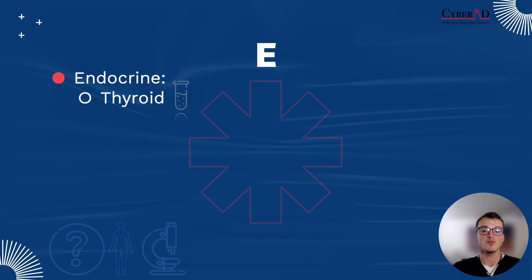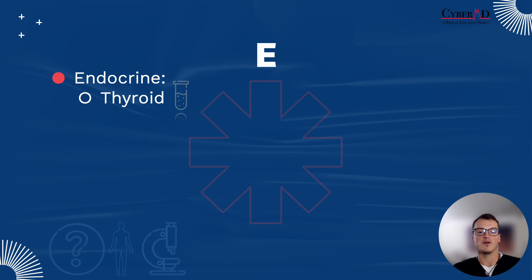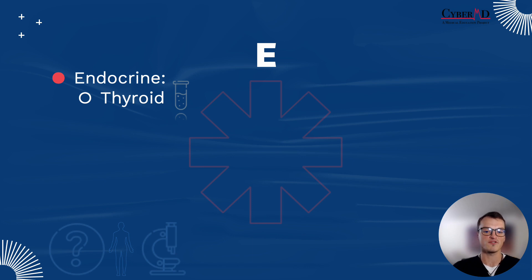Next up is E, which is fairly straightforward: endocrine etiologies, specifically the thyroid. On every patient who comes in with weakness, you should ask appropriate historical questions for thyroid dysfunction — things like heat or cold intolerance, which are classic thyroid questions, as well as tremors. Physical exam findings classically associated with thyroid dysfunction include coarse hair and brittle nails for hypothyroidism, and smooth silky fine hair and tachycardia for hyperthyroidism.